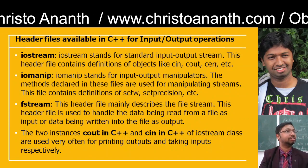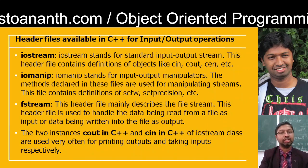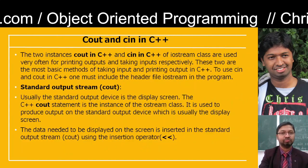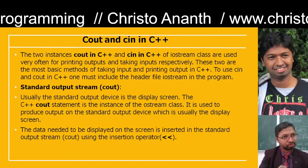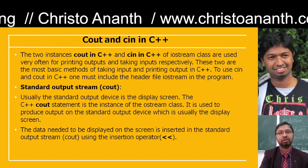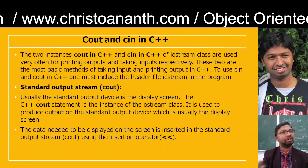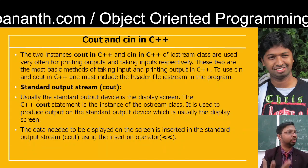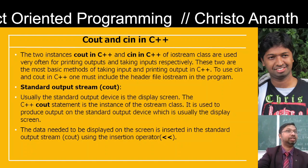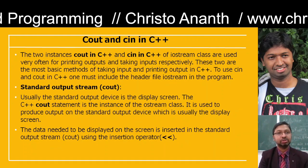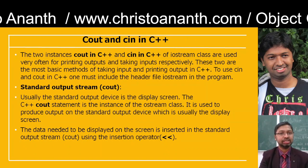There are two instances in C++: cout in C++ and cin in C++ of the input/output stream class. That is how you are going to take the inputs and print the output. Similarly in C++ programming, you try to process the results and output with cout — that is how you go for printf in C programming. These two are the most basic methods to take input and print output in C++.